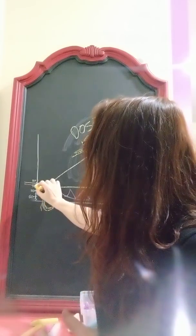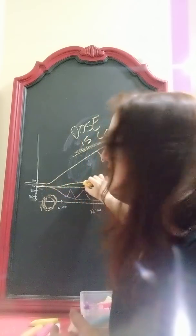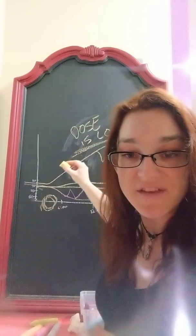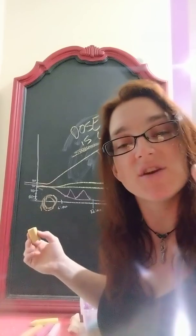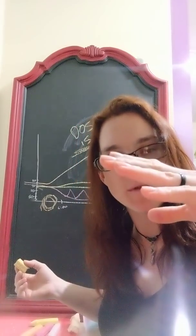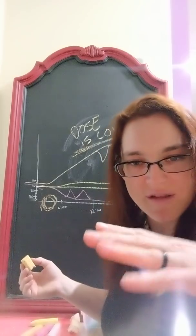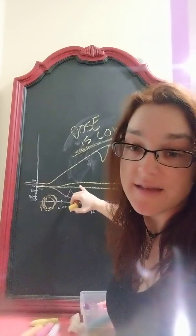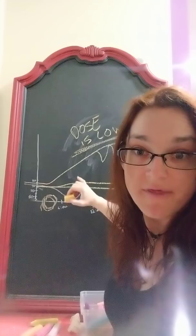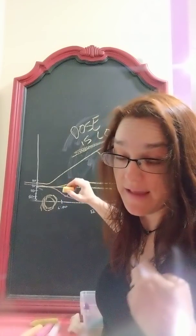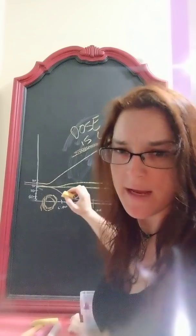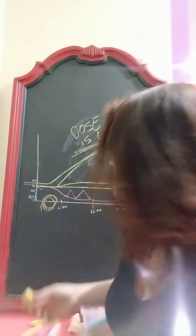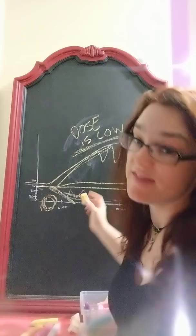A slight drift up during a basal test is actually a successful test for me — it means small, minute adjustments to my regimen are needed. A major spike upward means major adjustments are needed. A major drop low also means major adjustments are needed. I don't like being in those situations.